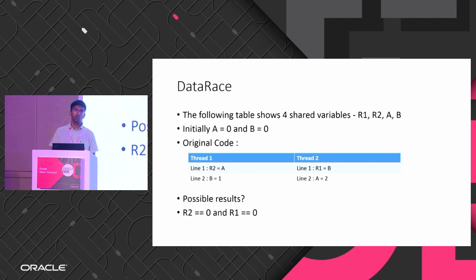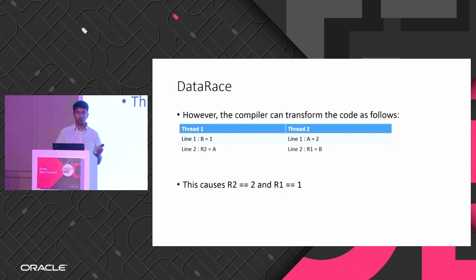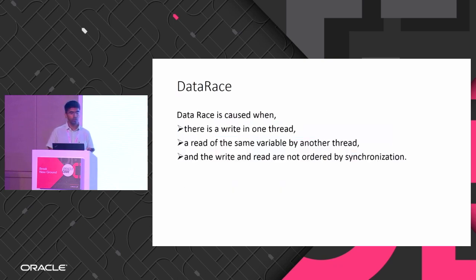But if you execute this, in some cases you will get R2 equal to 1 and R1 equal to 1. That's because the compiler can rearrange the code — making line two become line one. So B is updated first, R1 reads the value of B and gets one; A is updated to two and R2 reads A and gets two.